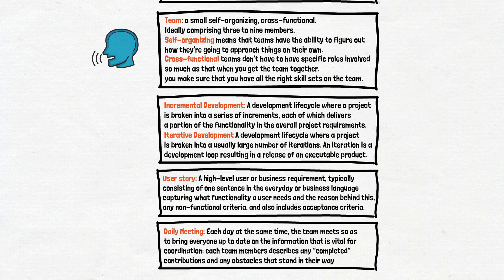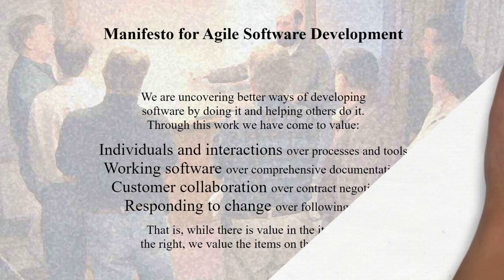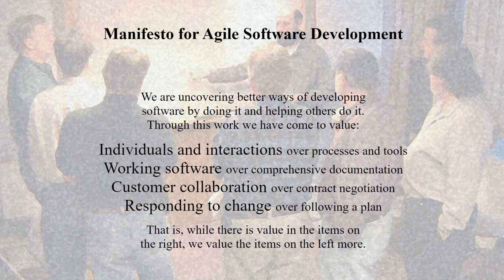Those two things are the Agile Manifesto and the 12 principles related to it. Ultimately, agile is a mindset informed by the Agile Manifesto's values and principles. Those values and principles provide guidance on how to create and respond to change and how to deal with uncertainty. The values are: individuals and interactions over processes and tools; working software over comprehensive documentation; customer collaboration over contract negotiation; and responding to change over following a plan.